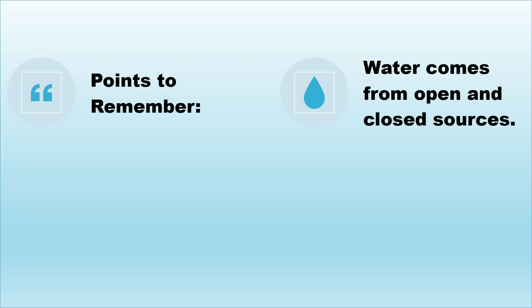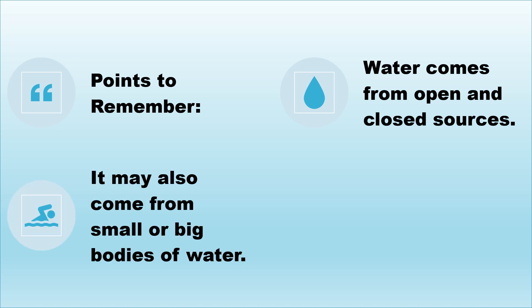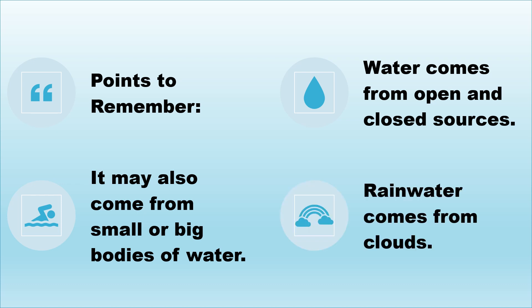Points to remember: We can find water in, on, and above Earth. Water comes from open and closed sources. Open sources refer to surface water like lakes, rivers, seas, oceans, and ponds. Closed sources refer to the water within the Earth, or groundwater. Water may also come from small or big bodies of water. A pond is a small body of water, while sea and ocean are big bodies of water. Rainwater comes from clouds, so rainwater is the water above the Earth.